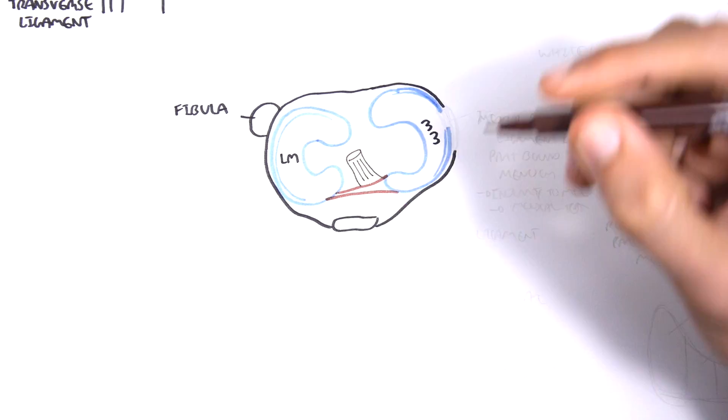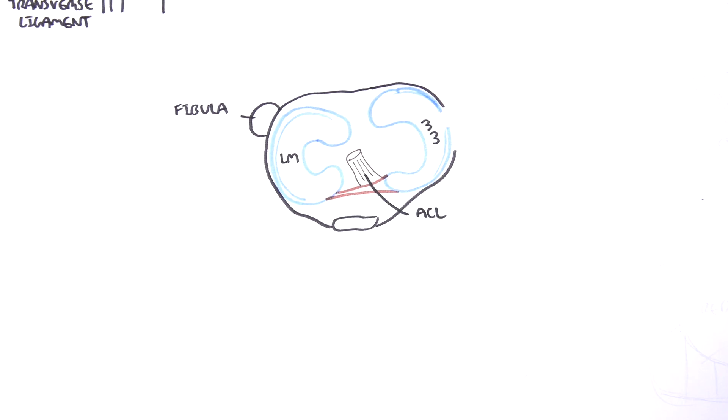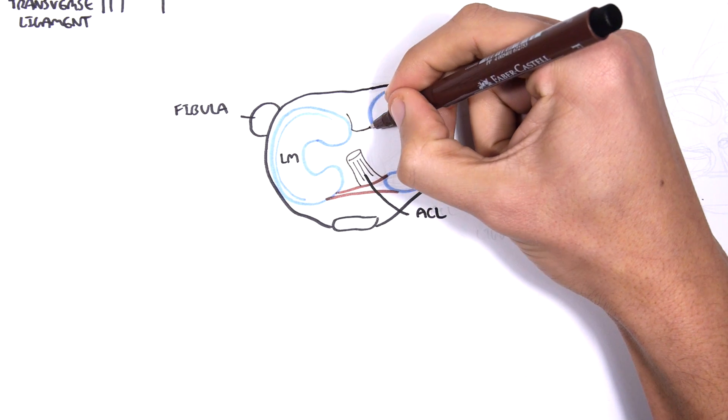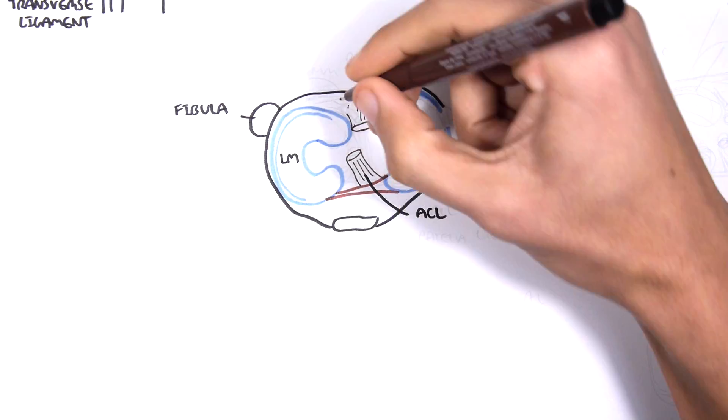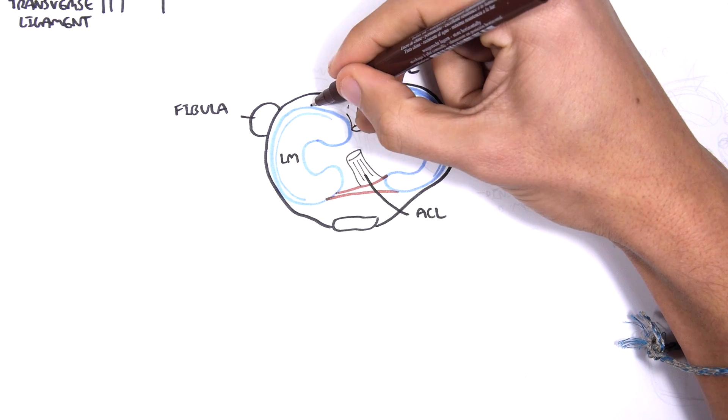Again, your cruciate ligaments: your ACL connecting to the anterior part of the tibia, and then you have your PCL, your posterior cruciate ligament, attaching to the posterior part of the tibia.